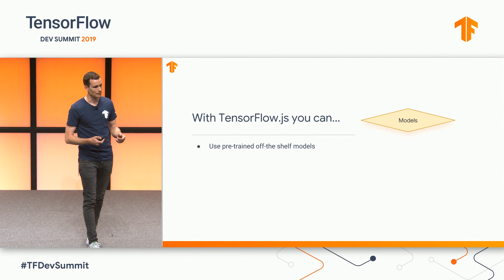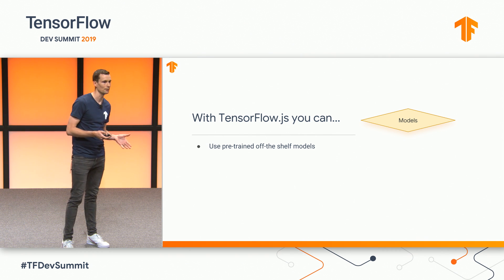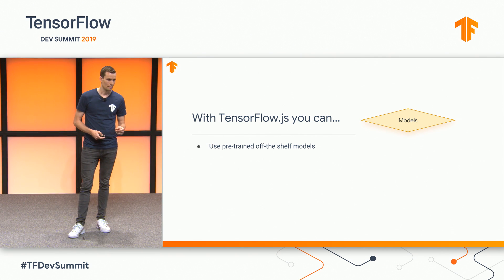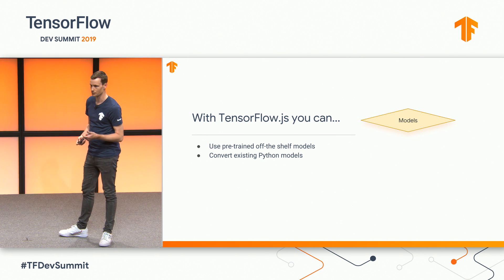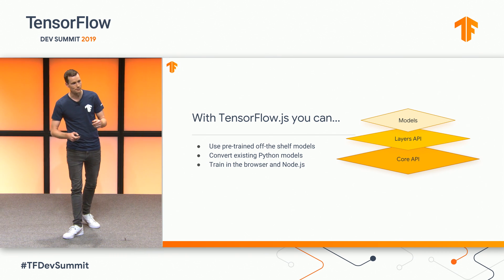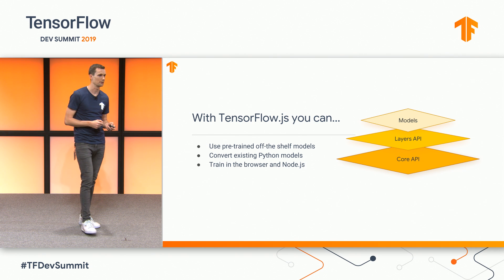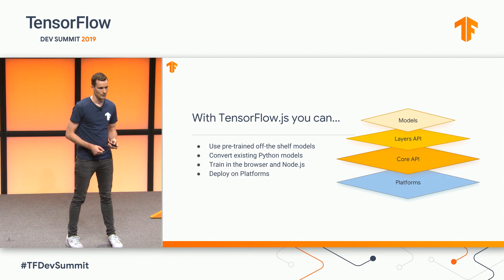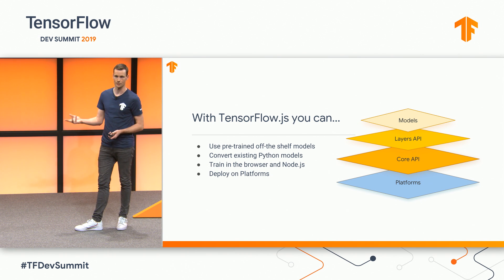What can you do today with the library? We have a collection of pre-trained off-the-shelf models that you can use without any knowledge of ML. We also have the ability to take existing Python models and convert them and run them in TensorFlow.js. We also have a full stack for training, inference, and low-level linear algebra, and that runs in the browser and in Node.js. We also have a bunch of platforms that JavaScript can run on outside of just the browser.